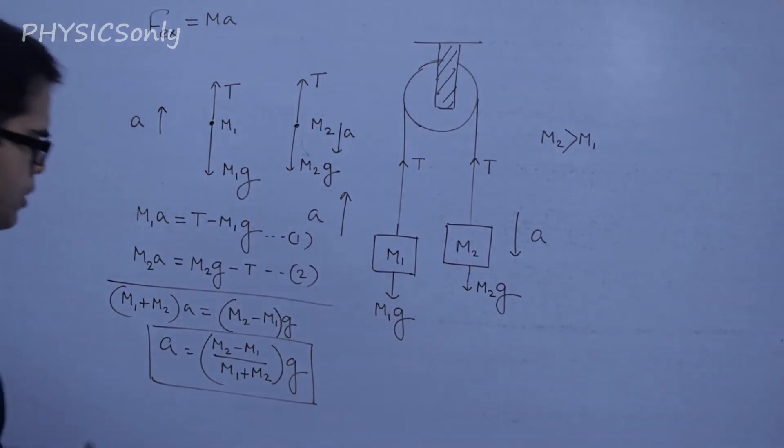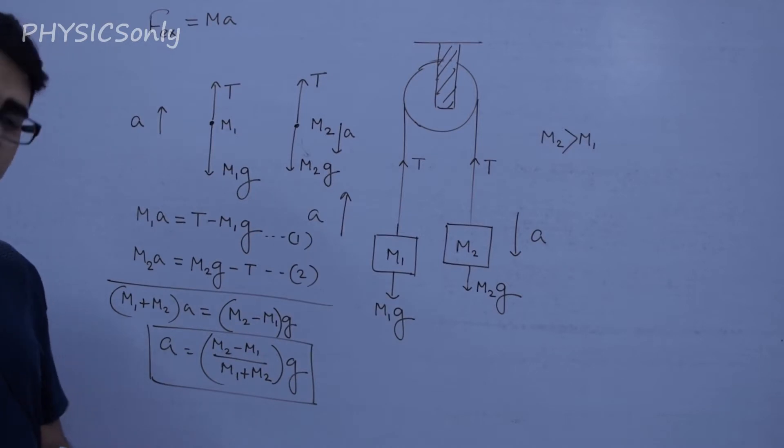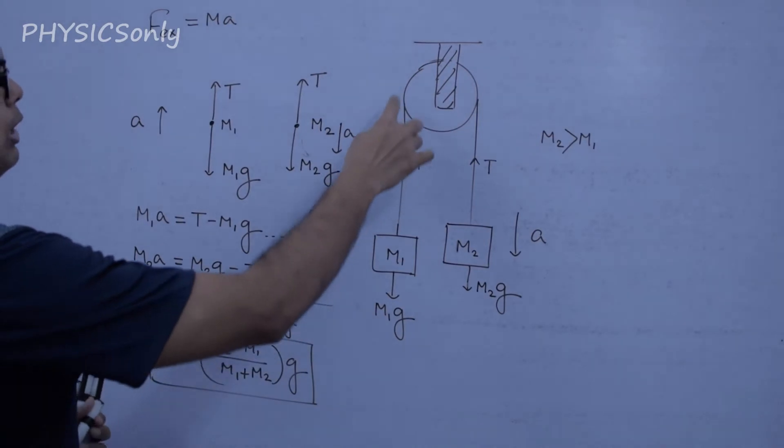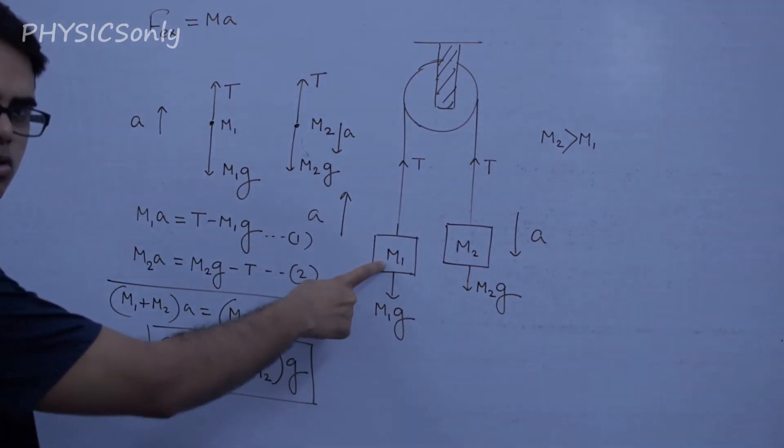And the acceleration a equals M2 minus M1 divided by M1 plus M2 times g. That's how we solve this situation. The upper level of your technique will improve, and the upper level of your technique is very high.